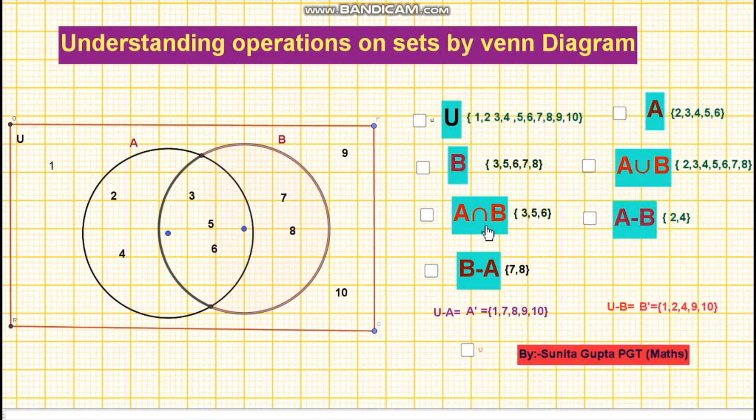Second operation is intersection of sets. The intersection of set A and set B is the set of all elements which are common to both A and B. So A intersection B will be the shaded region as shown on your screen. As shown on your screen, because 3, 5, 6 is included in set A as well as in B.